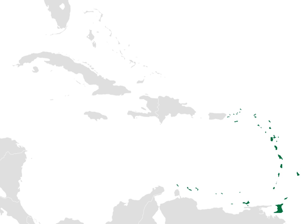Several islands along the north coast of Venezuela and politically part of that country are also occasionally considered part of the Lesser Antilles. These are listed in the section below.